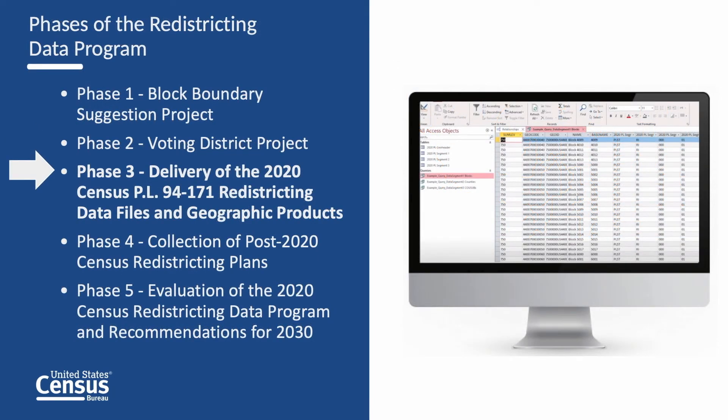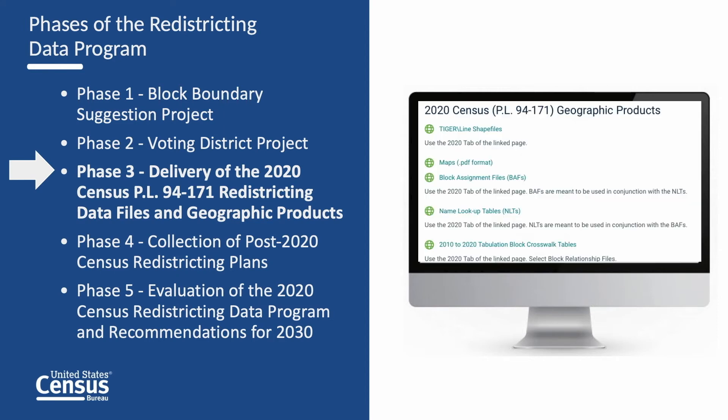This course pertains to phase three: delivery of the 2020 Census PL 94-171 redistricting data files and geographic products. The geographic support products were delivered to the states and published on the census website in January and February of 2021.